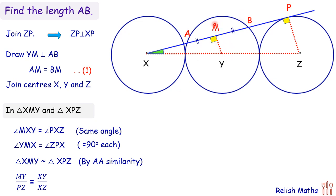Here I am taking MY upon PZ equals XY upon XZ. We are taking the sides MY and PZ upon XY and XZ. Now putting these values, we will get MY upon 10 equals 20 upon 40. XY is basically twice the radius and XZ is 4 times the radius, so that's 20 and 40. On simplifying it, we will get MY equals 5 centimeters.